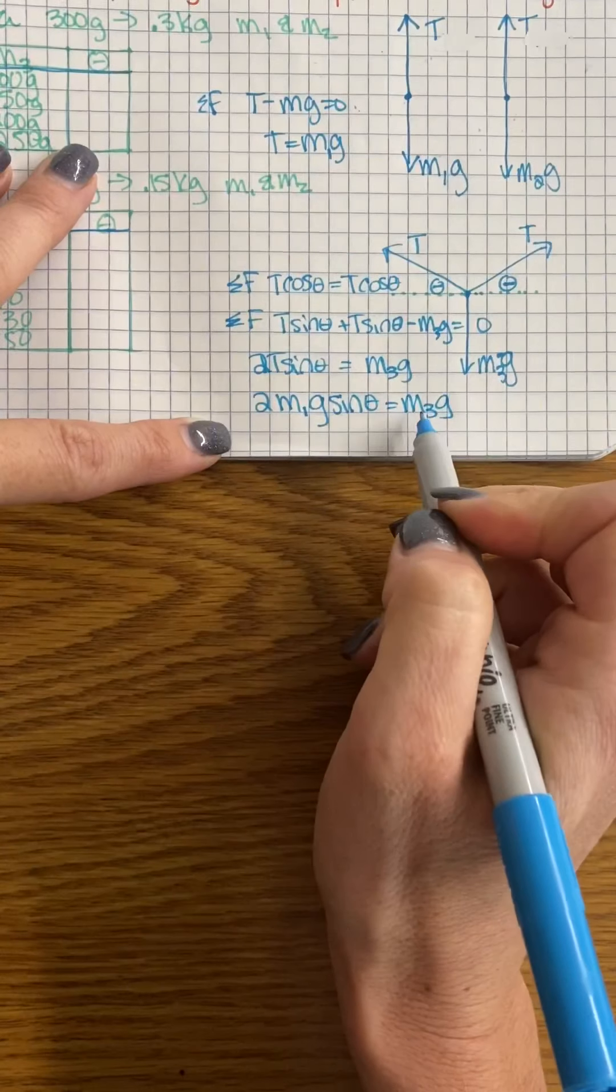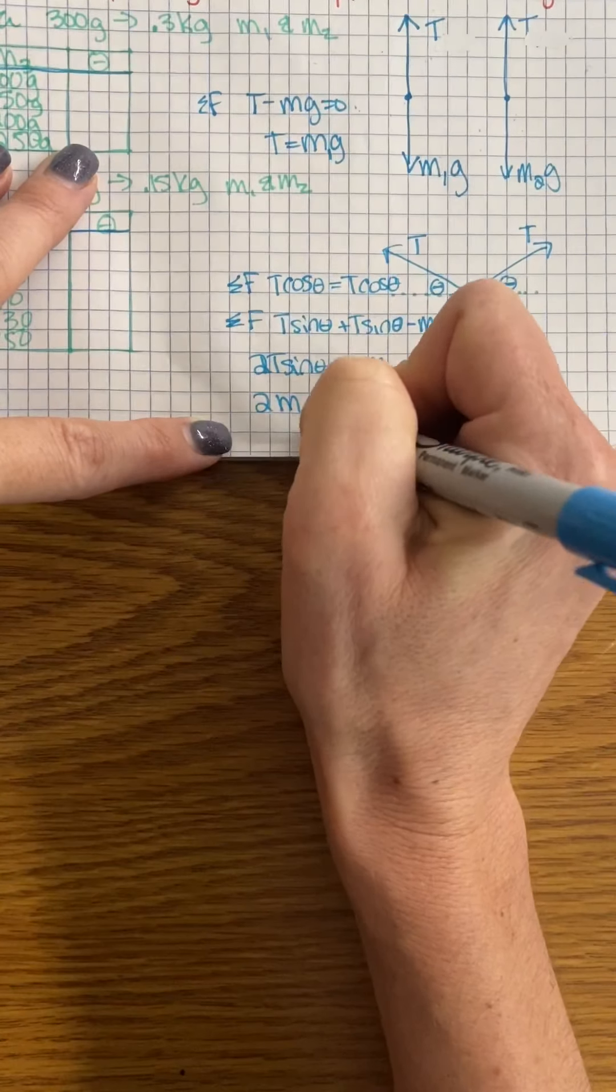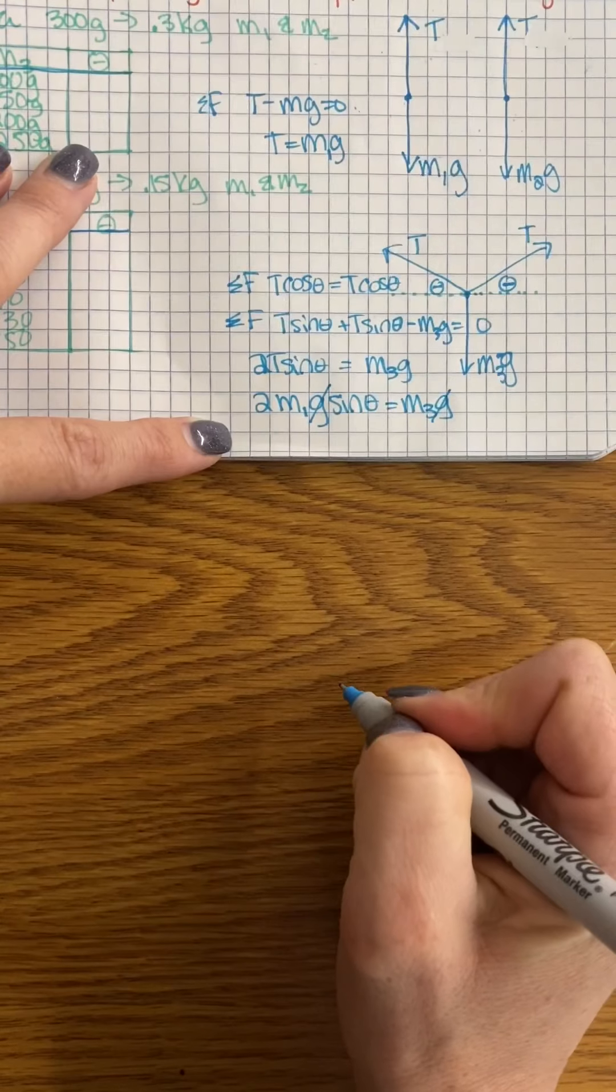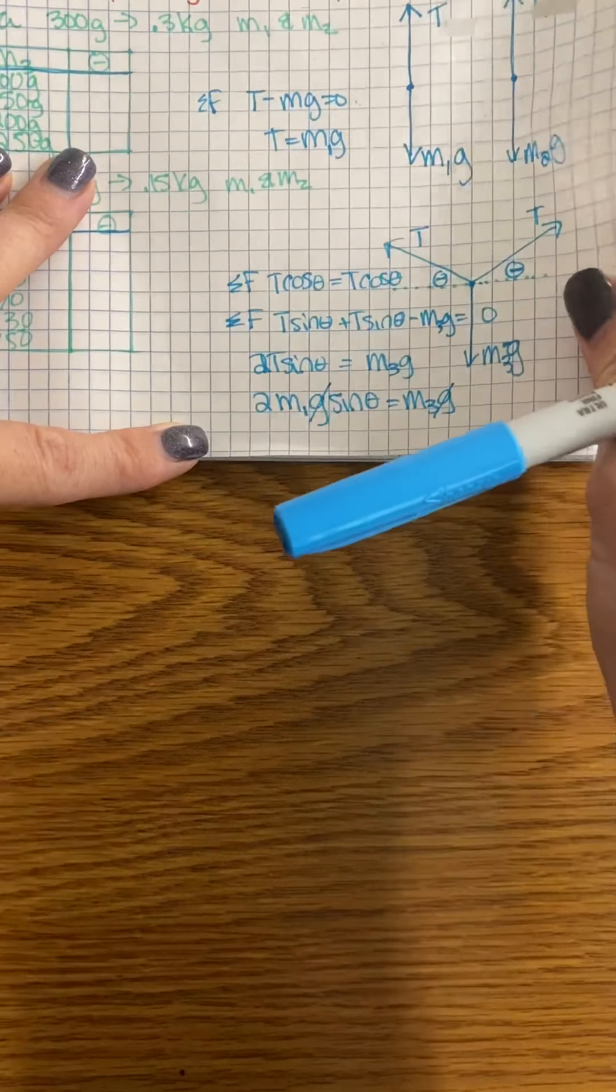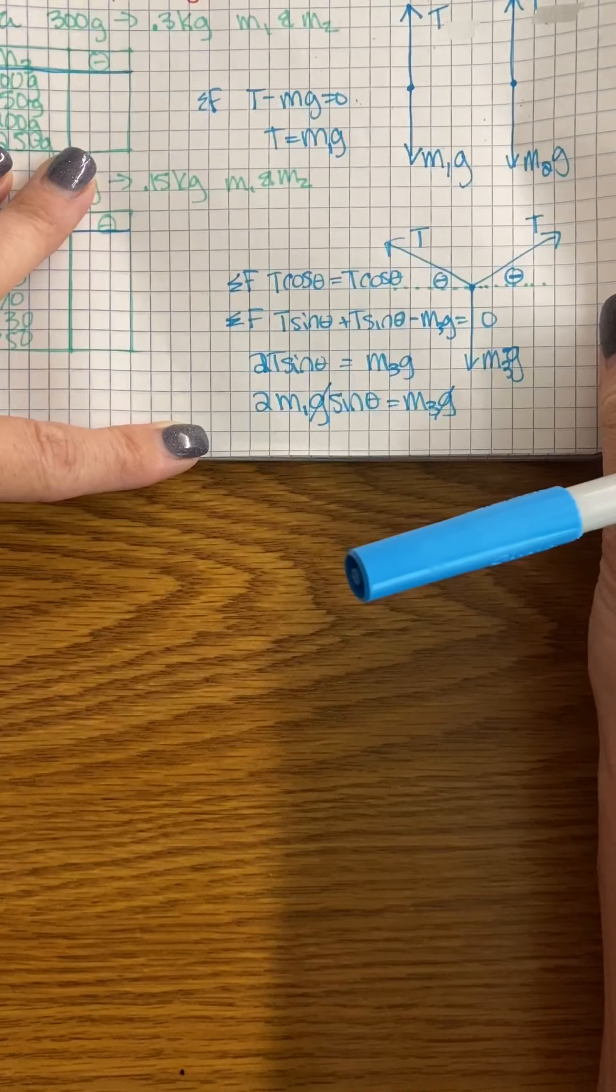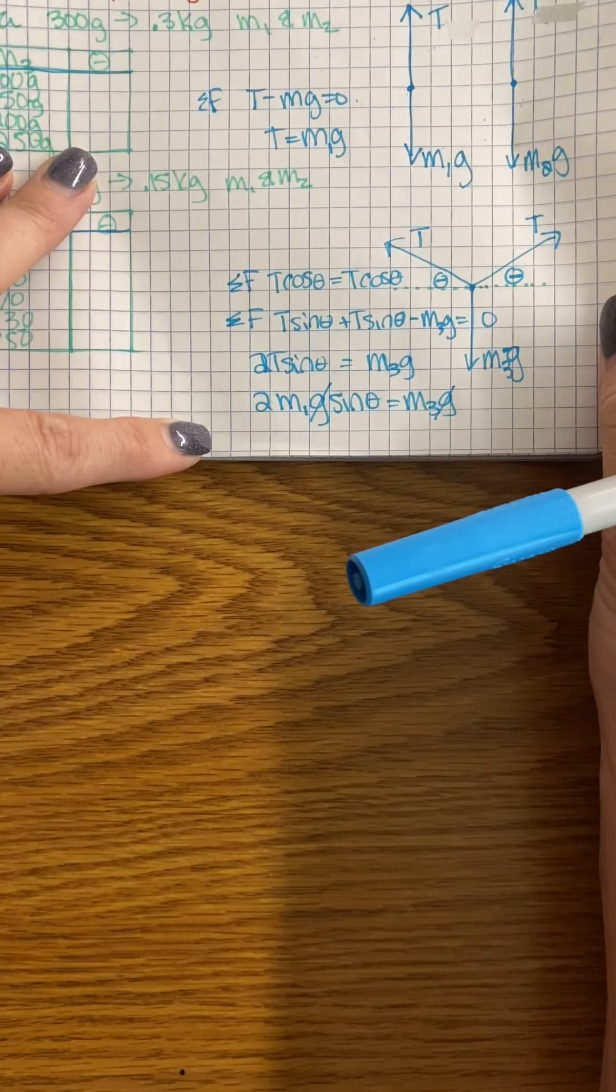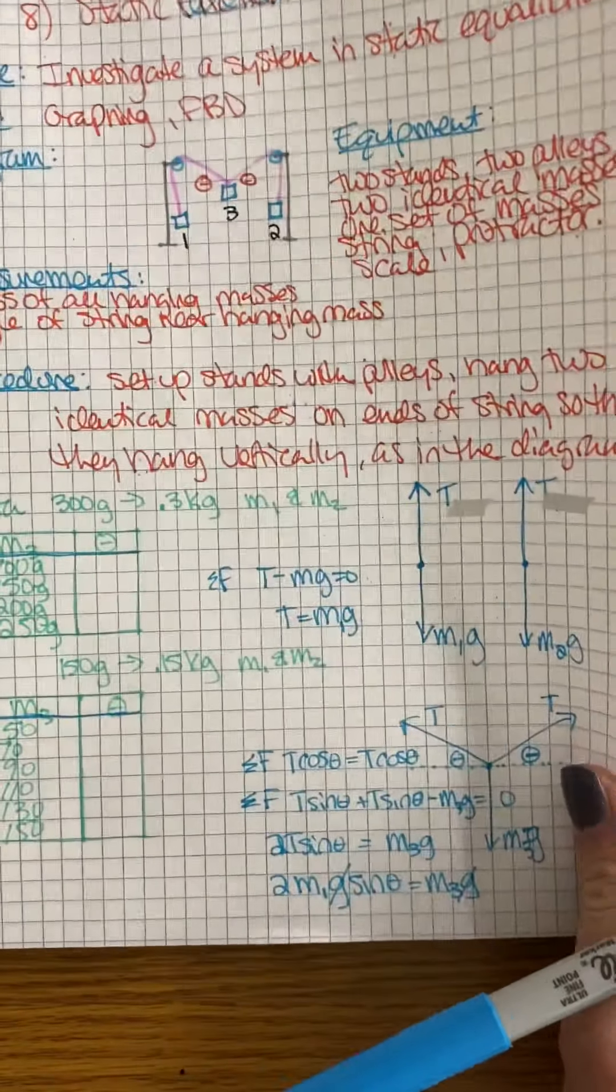This mass and this mass are not the same, so you can't cancel them out, but you can cancel out the g. All right, on your graph. So that's...